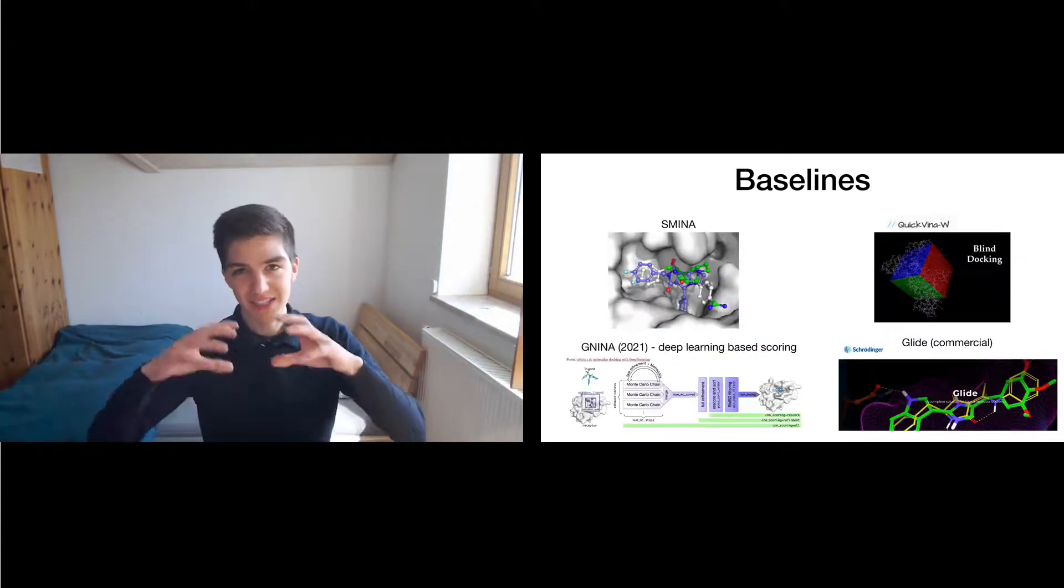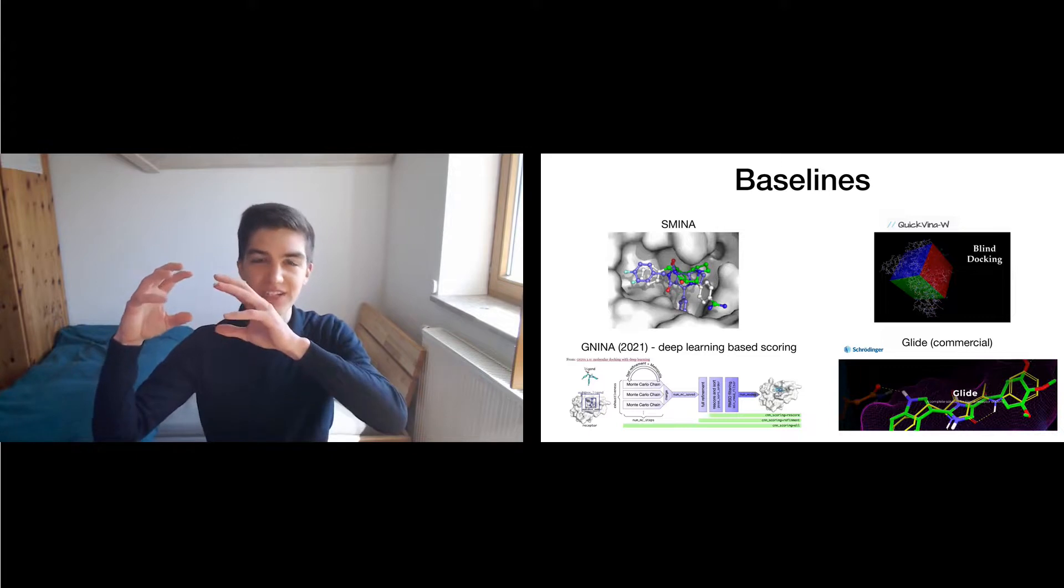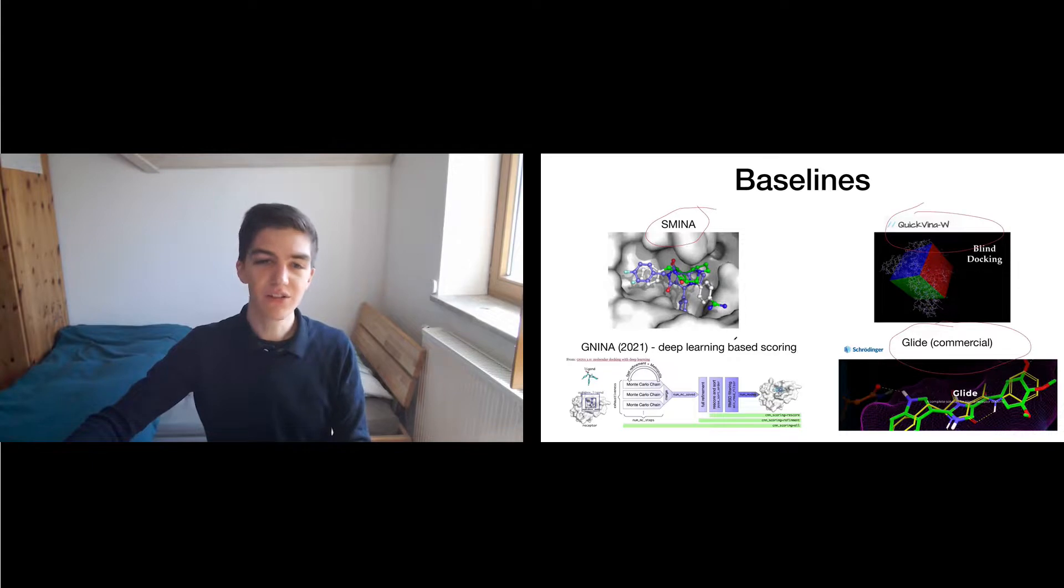We compare EquiBind against methods that sample many 3D positions and then score them. And there, we have three physics-based scoring functions and also Gnina, which is a deep learning-based score function.